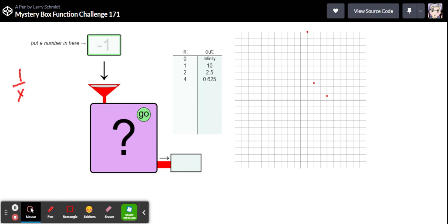So let's put in a negative 1. Oh so it's in the second quadrant, let's see if it continues to mirror that. Negative 2 gives us 2.5 and negative 4 should give us 0.625.